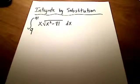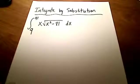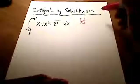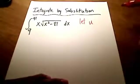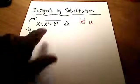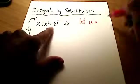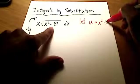I really hope you're finding these integration by substitution videos helpful to you, so here's yet another one. I'm going to start off by saying let's let u, our variable for substitution, be equal to what's inside of the square root here. In this case, it's the x squared minus 81.